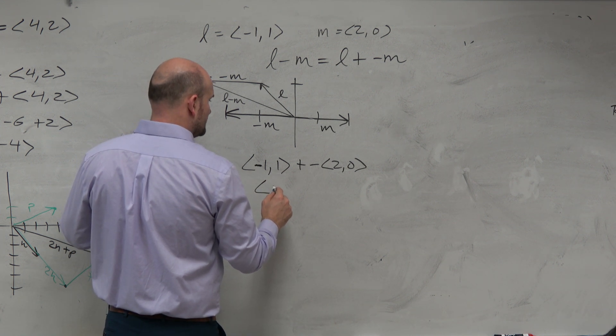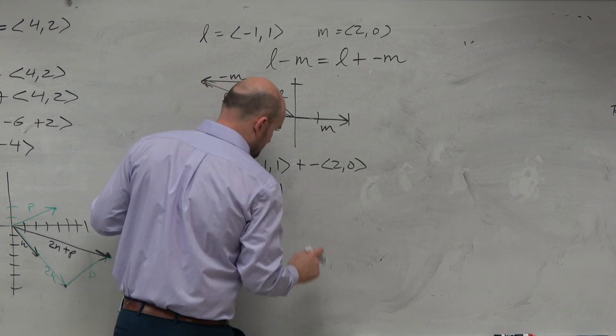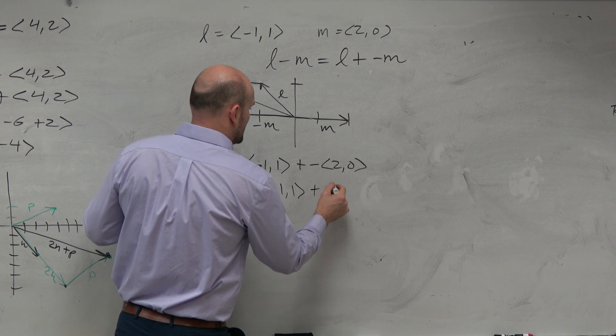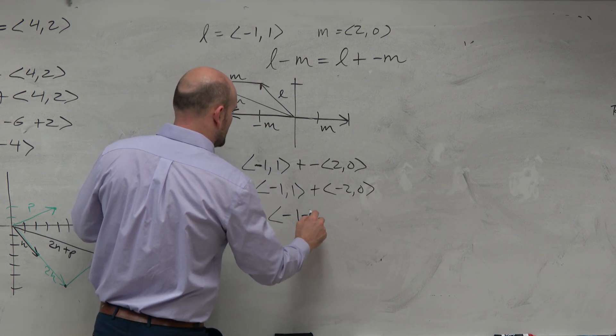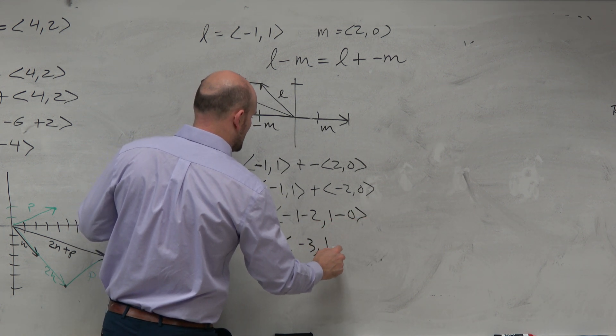So in this case, I have a negative 1. So yeah, I guess I can keep that. Negative 1, 1 plus a negative 2, 0. OK, so now I have negative 1 minus 2 and a 1 minus 0, which is a negative 3 comma 1.